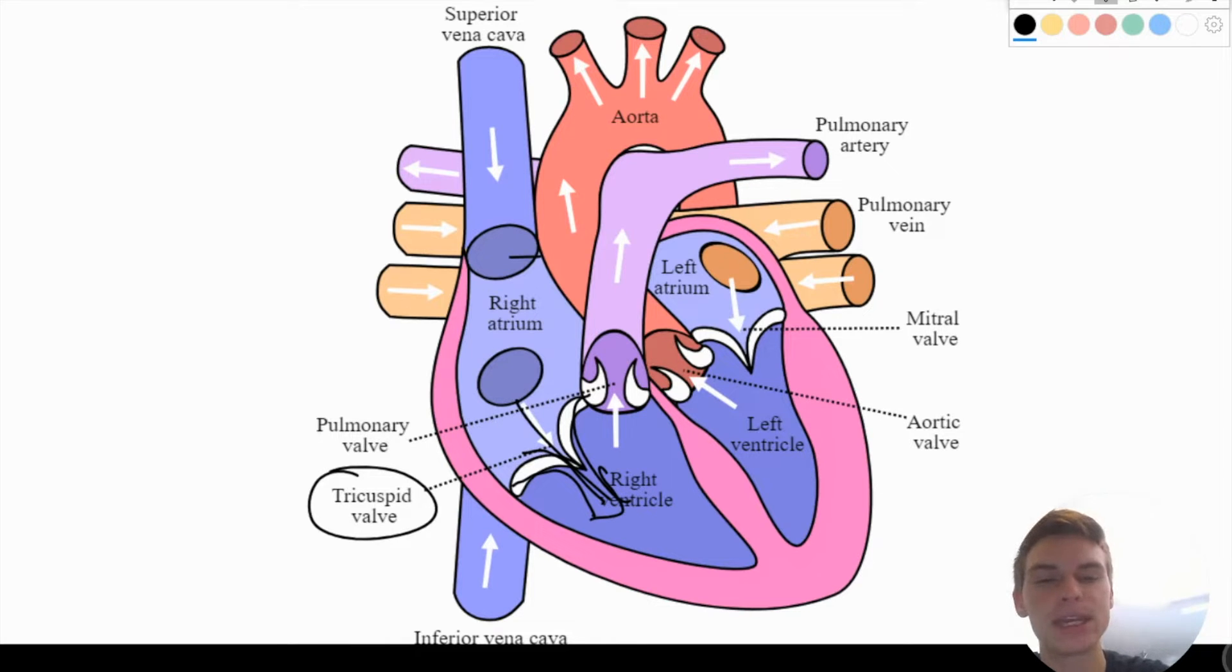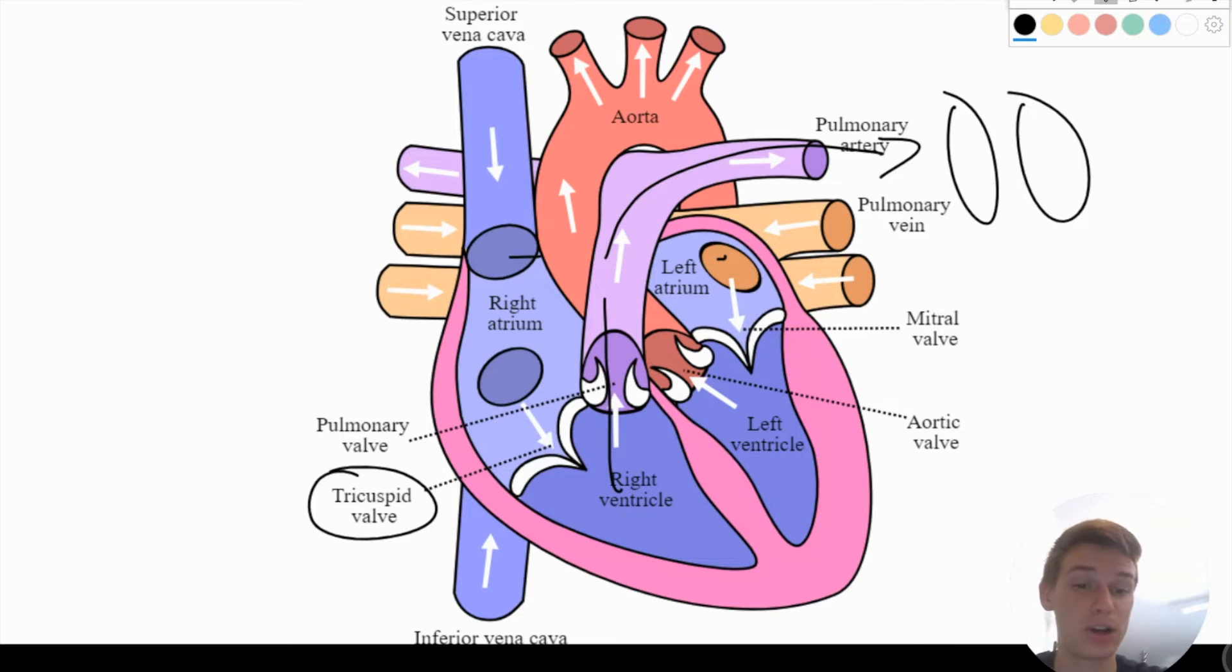Now that actually happens synchronously or at the same time as the left atrium flowing into the left ventricle. So after blood flows into the right ventricle, it's going to compress and it's going to flow out through this pulmonary artery, and that goes to our lungs. In our lungs, it's going to get oxygenated, then it's going to flow back into the heart through our pulmonary vein.